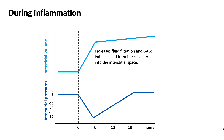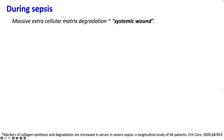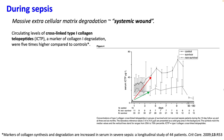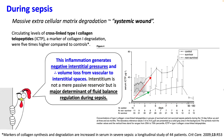During inflammation, increased fluid filtration and glycosaminoglycans imbibe fluid from the capillaries into the interstitial space, causing life-threatening hypovolemia — commonly seen in the first six to eight hours after burn injury. During sepsis, massive extracellular matrix degradation has been observed, sometimes called a systemic wound. This has been confirmed by measuring type 1 collagen telopeptides, which are markers of collagen 1 degradation; in sepsis, their levels are much higher than controls and even higher in non-survivors.